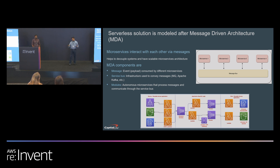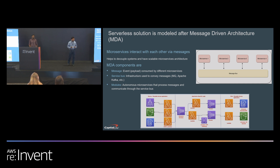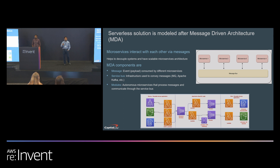We implemented a couple of use cases with Spark, and pretty soon we started seeing big headaches — managing the infrastructure, cost going up, complexity of managing job failures, monitoring, and so on. We really started thinking: is Apache Spark the right tool for the job? We needed a big data engineering tool, but did it have to be Spark? That's where we started looking into other possible services — and that brought us to model-driven architecture, which led us to explore how we could use it with an AWS infrastructure to replace Apache Spark.